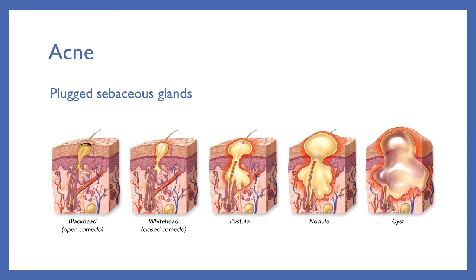Merocrine glands are the pseudostratified glands we saw in lab. Sebaceous glands are at the base of every hair follicle and constantly secrete oil to coat the hair. Sometimes the follicle gets plugged — the gland doesn't know it's blocked, so it keeps producing, and secretions accumulate under the surface forming a bulge. This is how acne occurs.